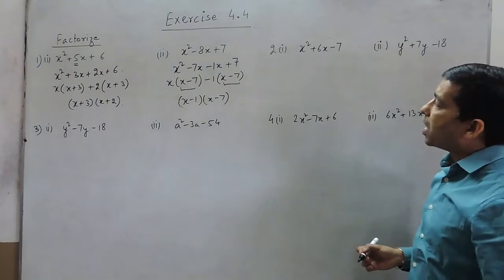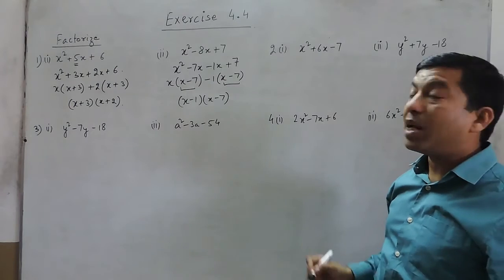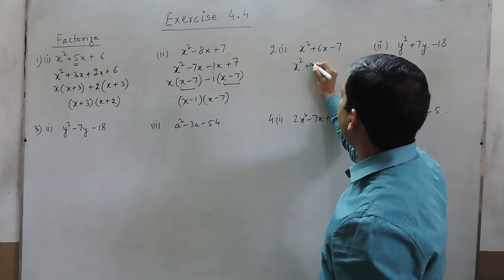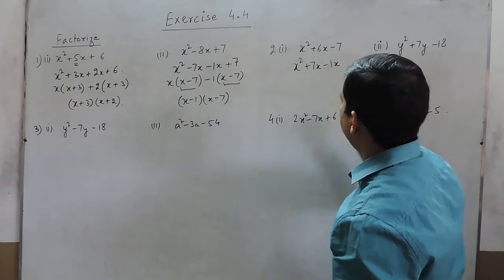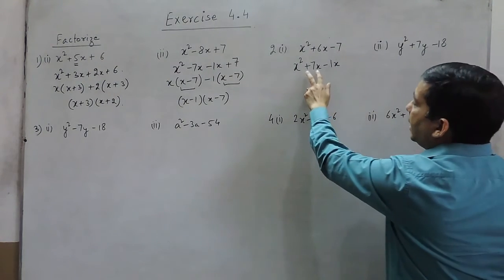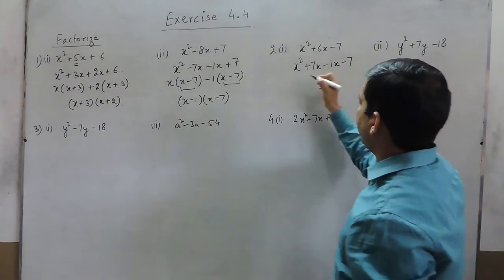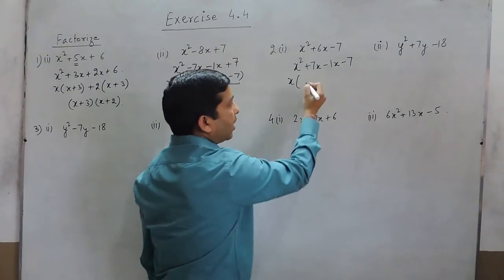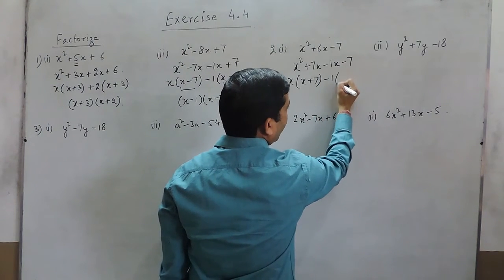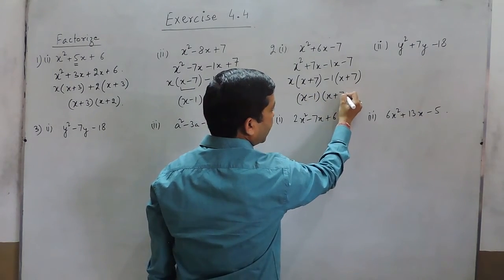For question number 2, part 1, the sum must be 6 and the multiplication must be minus 7. The two numbers are 7 and minus 1: multiplying gives minus 7, and adding plus 7 and minus 1 gives plus 6. Taking x common gives x plus 7, and taking minus 1 common in the last two terms also gives x plus 7. So the two factors are x minus 1 and x plus 7.